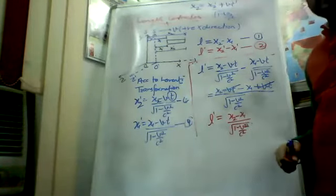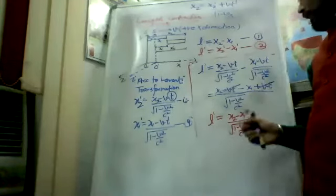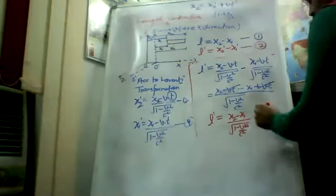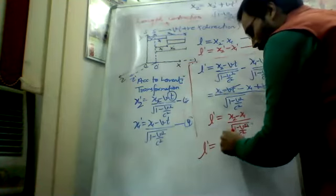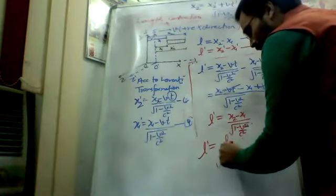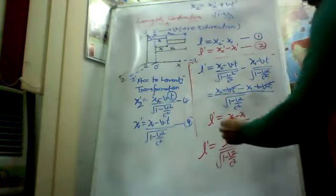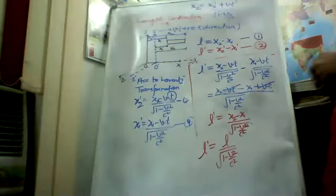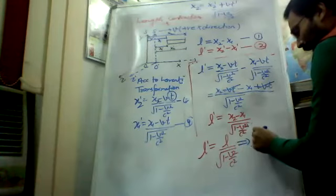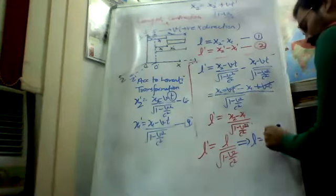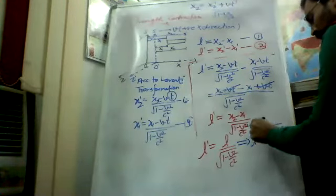From equation 1, x2 minus x1 equals L. This result becomes: L-dash equals L upon under root(1 minus v²/c²). Therefore: L equals L-dash times under root(1 minus v²/c²). That is the expression for length contraction.